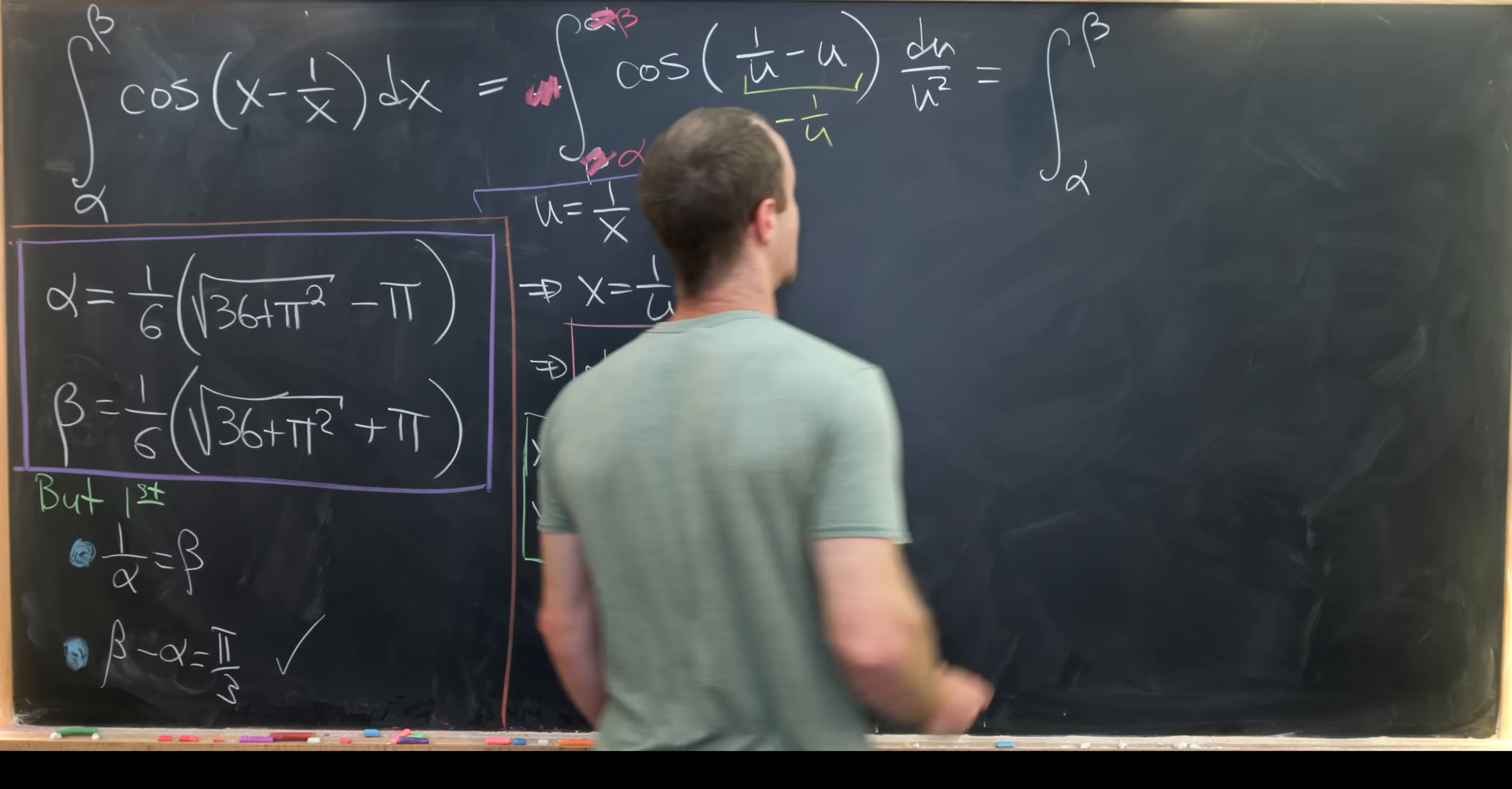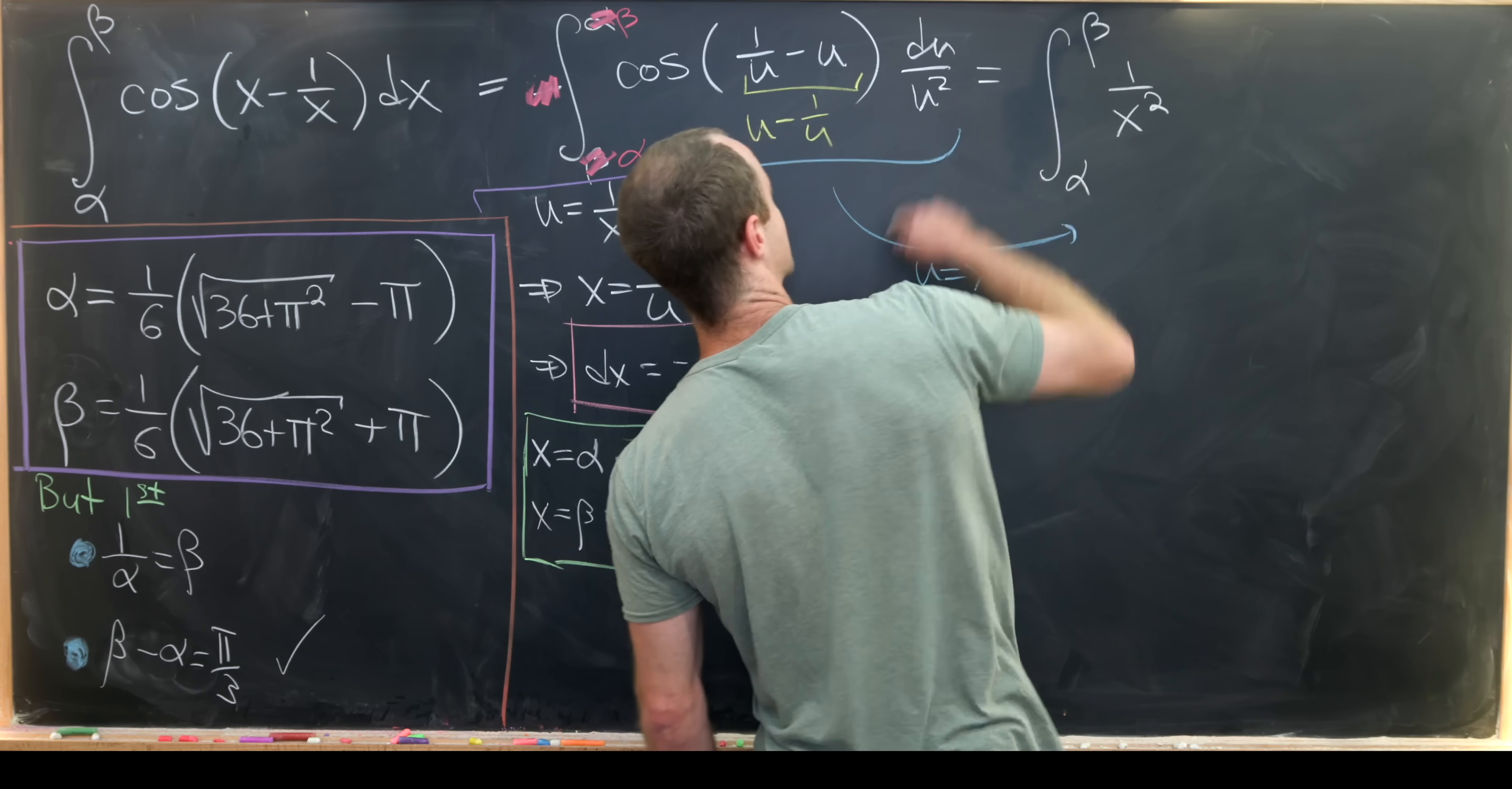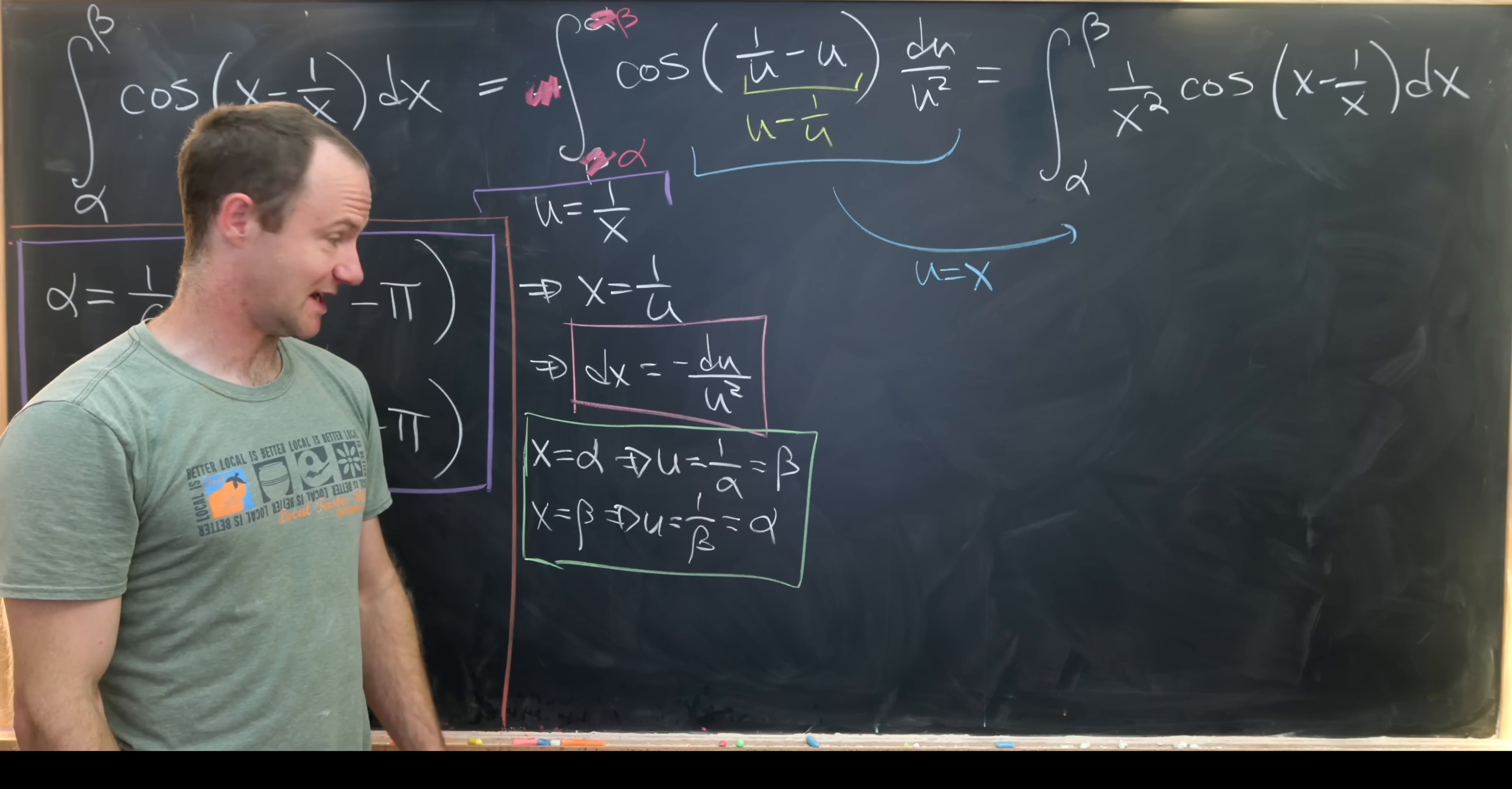Okay so that's going to leave us with something like this. We have the integral from alpha to beta, and actually I'm going to do one more switch while we're at it. I'm going to take all the u's here and replace them back with x's. So that's just doing a trivial substitution. So I'm kind of piggybacking this trivial substitution on top of this substitution that did our change of bounds and our change of dx. Okay so that's going to give us a 1 over x squared from this 1 over u squared, and then we'll have the cosine of x minus 1 over x dx.